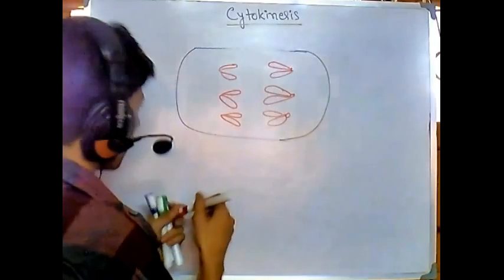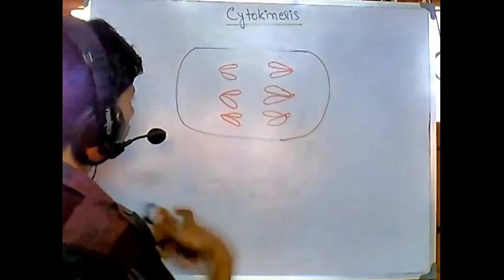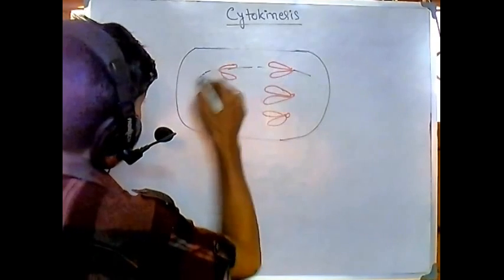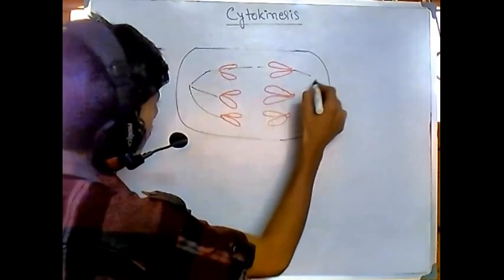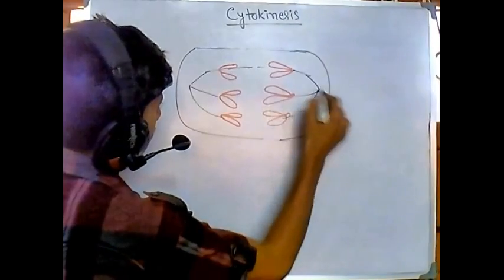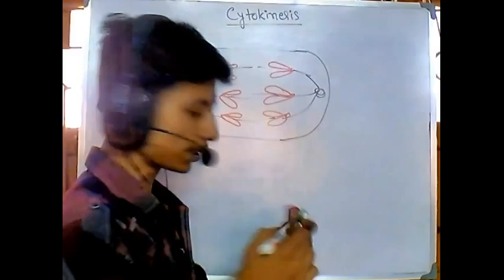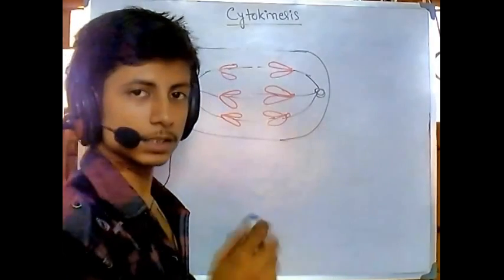What is forming there? The microtubules, right? Because the microtubule organizing center is there. From this organizing center, they form these microtubules. As these microtubules are there, there are vesicles which start to form.